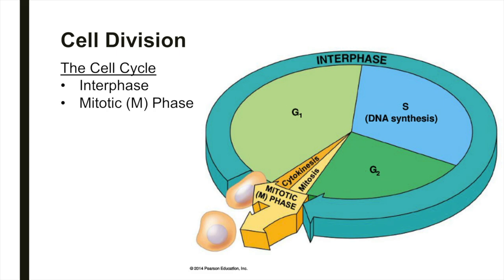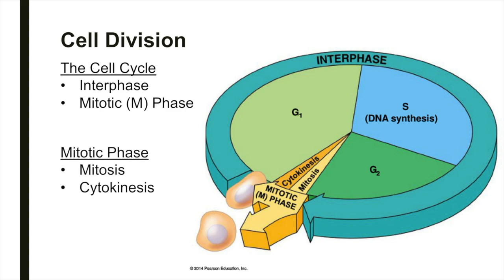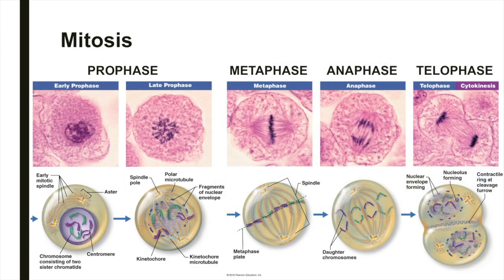Interphase is much longer than the mitotic phase. During the mitotic phase of the cell cycle, the cell undergoes cell division, which is essential for growth and repair. During cell division, the cell undergoes mitosis and cytokinesis. Mitosis is the division of a cell into two genetically identical daughter cells. Cytokinesis is the division of the cytoplasm. The phases of mitosis include prophase, metaphase, anaphase, and telophase. To familiarize yourself with the detailed events of interphase, mitosis, and cytokinesis, study figure 4.5 on pages 44 and 45.